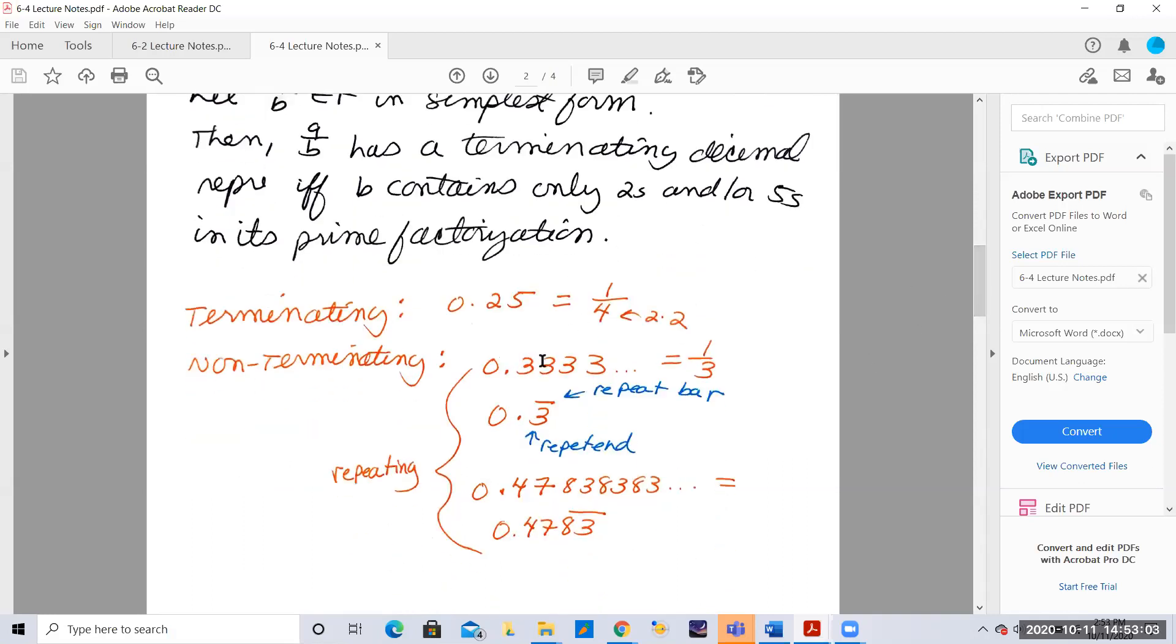Whereas 0.333 and so on is a third. We can write that using a repeat bar where three is the repetend. And notice three on the bottom. It's not made up of twos and or fives. We need only twos and or fives because each decimal place is a power of ten. So tens are made up of only twos and fives.